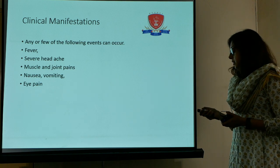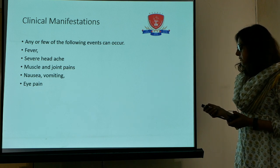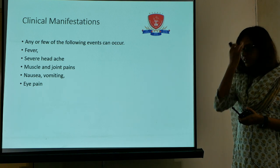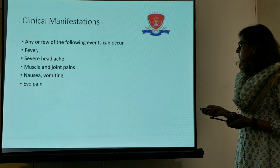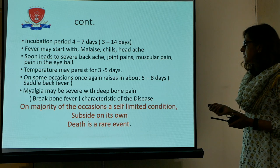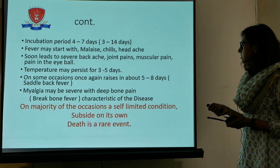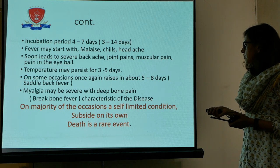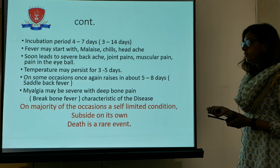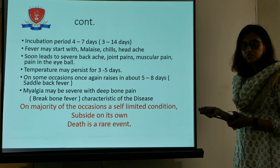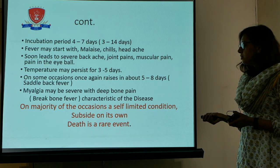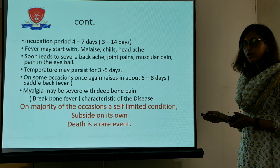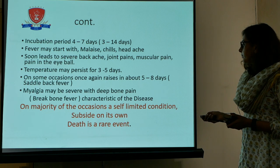The clinical manifestations of dengue include high-grade fever with chills, severe headache, muscle and joint pains, nausea, vomiting, and eye pain. There is a characteristic retro-orbital pain, and patients frequently complain of low backache. The incubation period is usually 4 to 7 days. Fever starts with malaise, chills, and headache, followed by severe backache, joint pains, muscular pain, and pain in the eyeballs. The myalgia may be so severe that the patient experiences a deep bony pain — this is why it is called break bone fever, which is characteristic of this disease. High-grade temperature may persist for 3 to 5 days, and the condition could be self-limiting or it could escalate to dengue hemorrhagic fever or dengue shock syndrome.